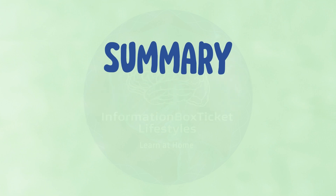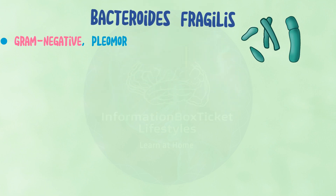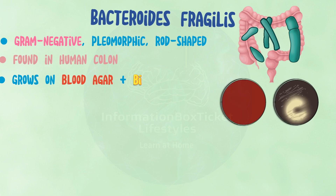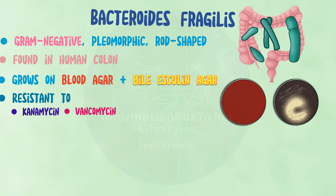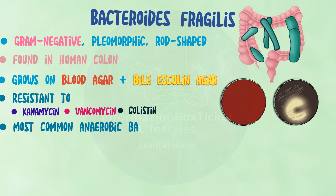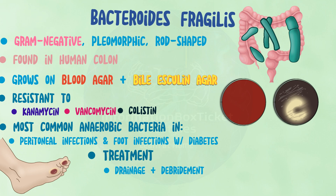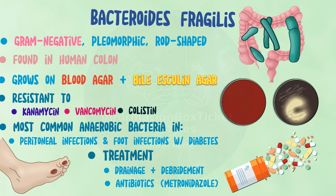Summary: Bacteroides fragilis is a gram-negative, pleomorphic, rod-shaped bacterium found in the human colon. It grows on blood agar and bile-esculin agar, and is resistant to kanamycin, vancomycin, and colistin. It is the most commonly identified anaerobic bacterium in peritoneal and foot infections in diabetic individuals. Abdominal abscesses are drained, necrotic tissue is debrided, and antibiotics such as metronidazole are administered.